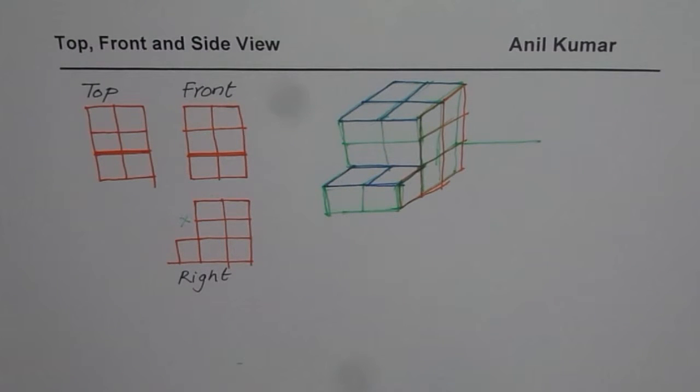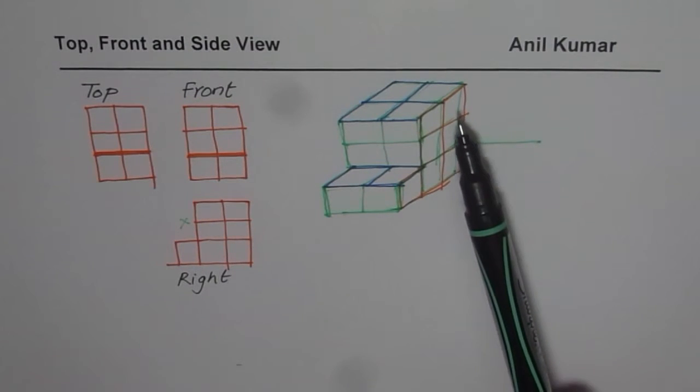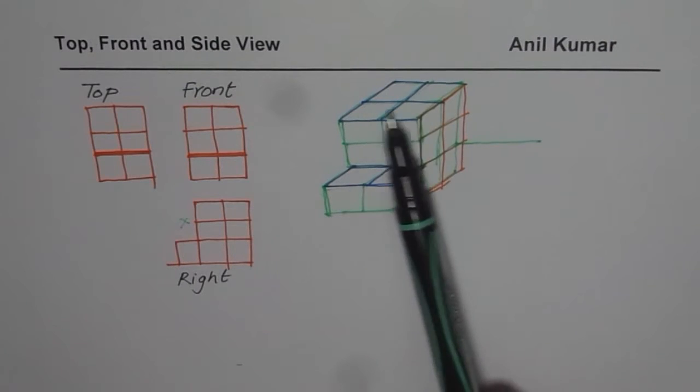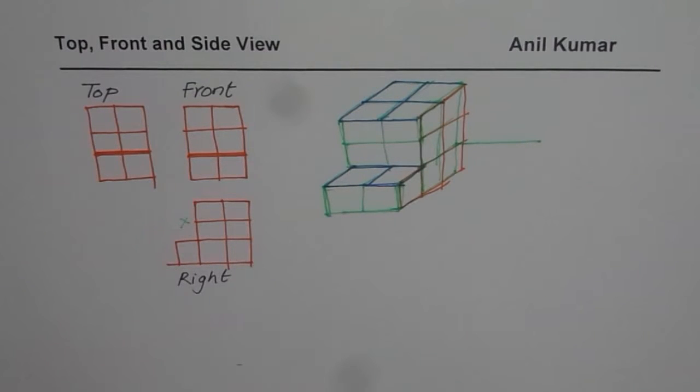At times what you can do is, you can also work with your cubic blocks to see and visualize. So in this particular case, there are cubic blocks three and three each of two types. Two rows, three columns.